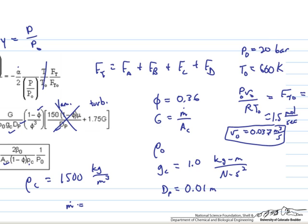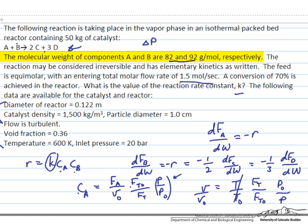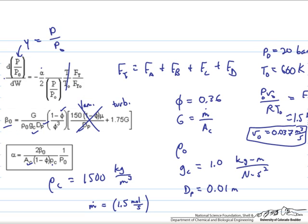We're also going to want to know the mass flow rate. So the mass flow rate, we can take the molar flow rate and convert it to the mass flow rate, just with the average molecular weight of the mixture. If we go back to the problem statement, we see that we have equal molar amounts of these two components that weigh 82 and 92 grams per mole. And so the average molecular weight then is 87 grams per mole. And I'm going to convert this to kilograms, so 0.087 kilograms per mole.